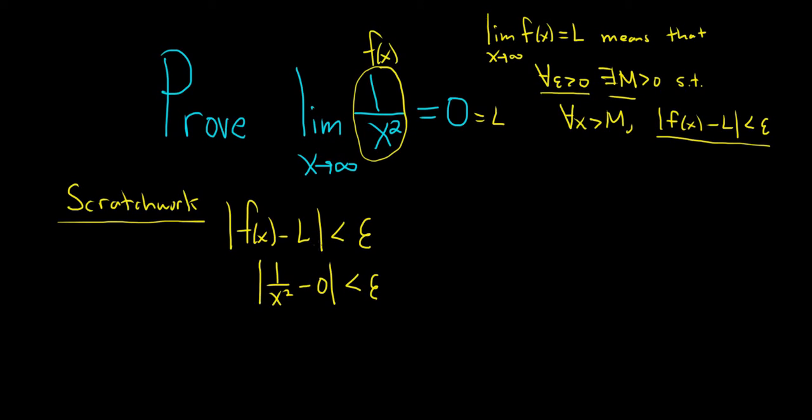All right, good stuff. So this is 1 over x squared less than epsilon. I dropped the absolute value because x squared is always going to be positive here. x is positive in this case, right? x is approaching infinity, so you can treat it as a positive number.